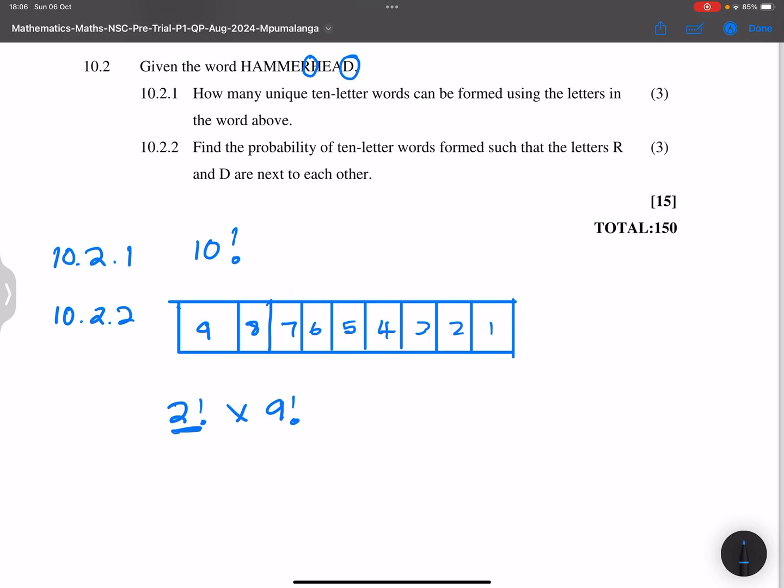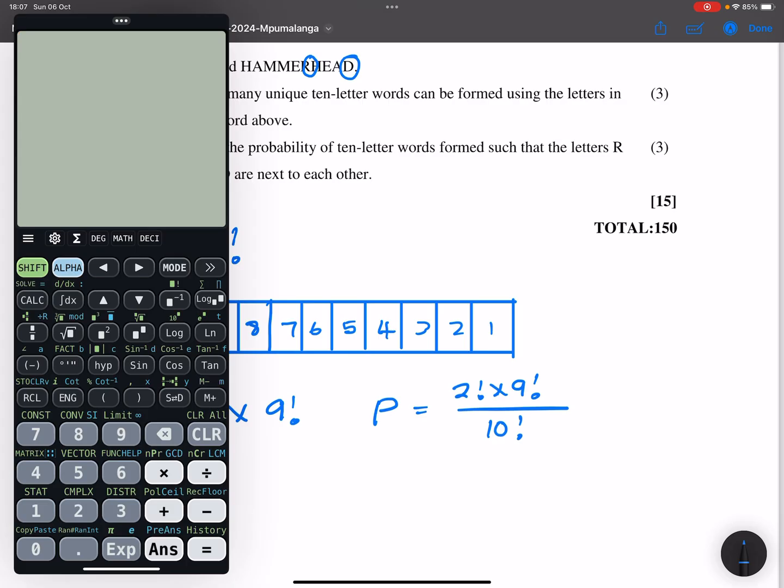And so what would be our probability? So the probability, remember, we are not just looking for the number of possibilities, we're looking for a probability. So we're going to say two factorial times nine factorial divided by the total number of possibilities, that's 10 factorial. So that's going to be two factorial, multiplied by nine factorial, divided by 10 factorial. And my probability there is 0.2.